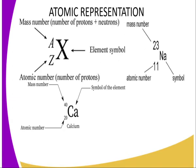Another example is sodium, whose scientific name is natrium, hence the symbol Na. Its atomic number is 11, but it has a mass number of 23 — that is 11 protons and 12 neutrons — giving a total of 23 as its mass number.